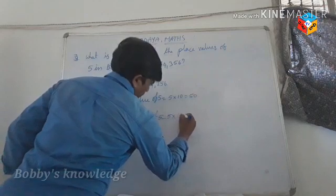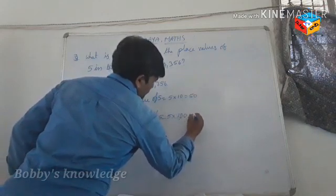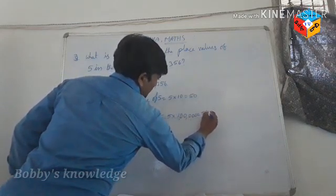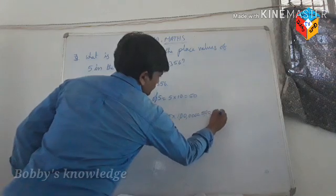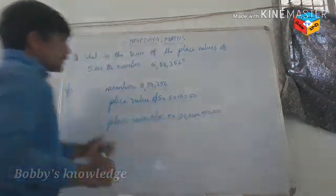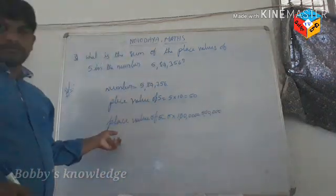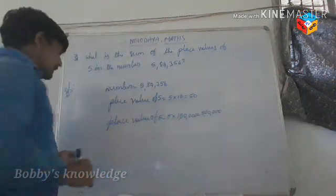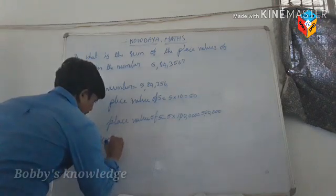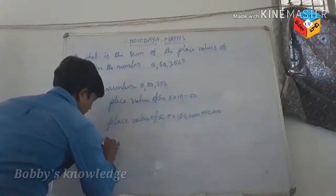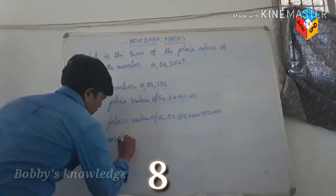The second place value of 5 is in the lakhs place: 5 into 1 lakh equals 5 lakhs. The sum of the place values is 5 lakhs plus 50, which gives option 4 as the correct answer.